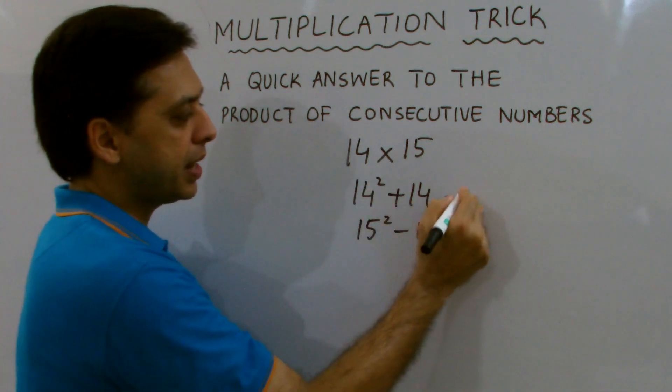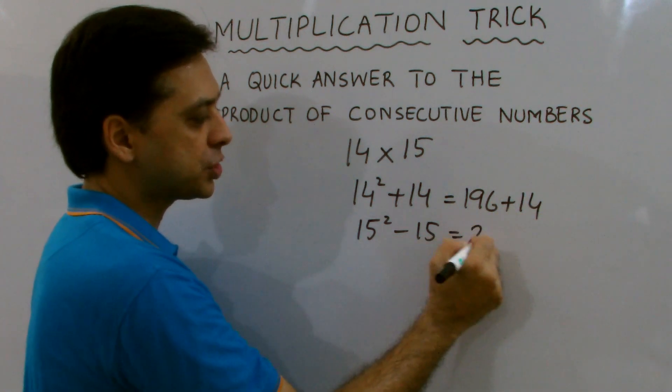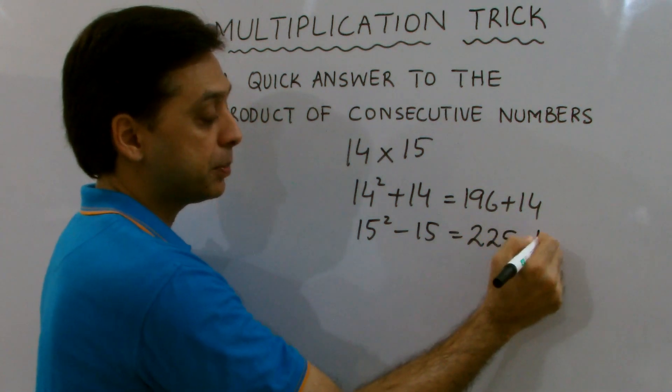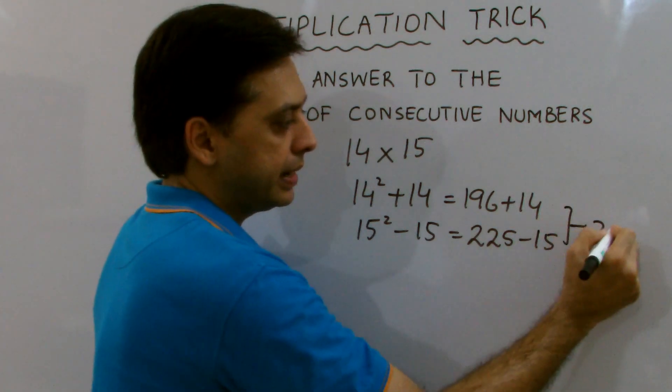Now, when you square 14, you get 196. Add 14. Similarly, 15 square is 225. You subtract 15. So the answer in both cases is 210.